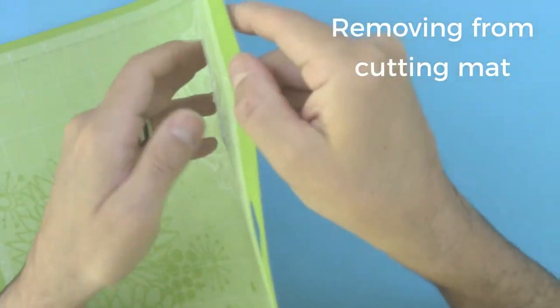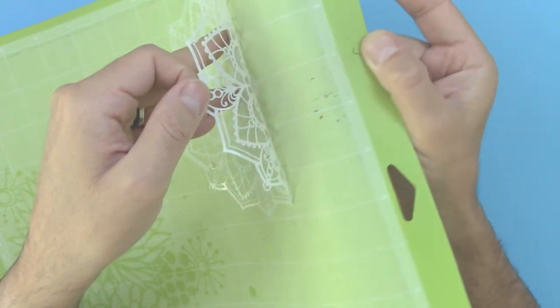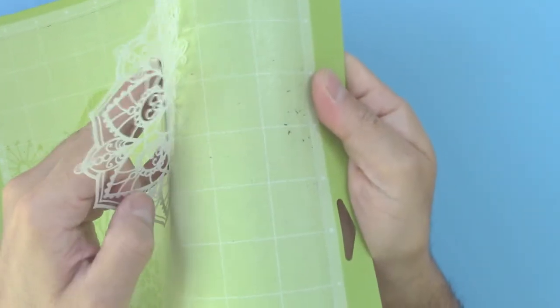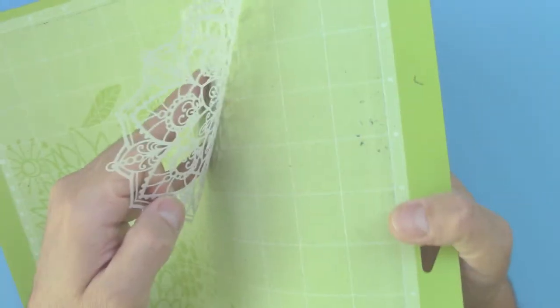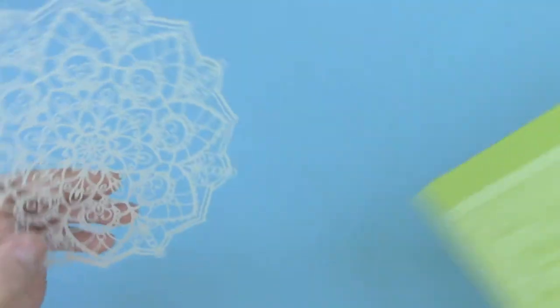When you remove your stencils, depending on the intricacy of your design, make sure to bend your mat a little bit and pull on the stencil. Do not pull too hard to avoid bending your stencil. That could render your stencil useless.